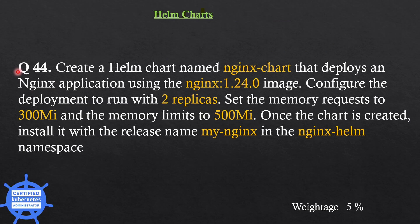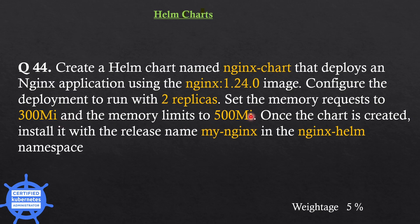The next question is to create a Helm chart named nginx-chart that deploys an Nginx application using the Nginx version 1.24.0 image. Configure the deployment to run with two replicas. Set the memory requests to 300MB and the memory limits to 500MB. Once the chart is created, install it with the release name myNginx in the nginx-helm namespace.